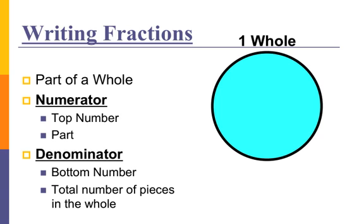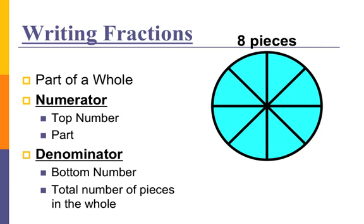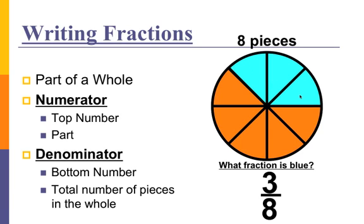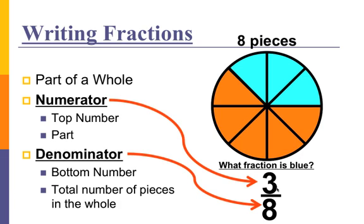Here I have another example where I have one whole broken into eight pieces. I'm going to shade a certain number, and my first question is: what fraction is blue? I've got eight total pieces and three of which are blue — one, two, three. So that fraction is going to be three eighths. My numerator is three because that's the part I'm talking about, which is blue, and eight is my denominator because there are eight total pieces in my whole.